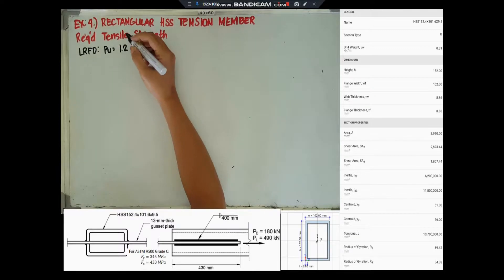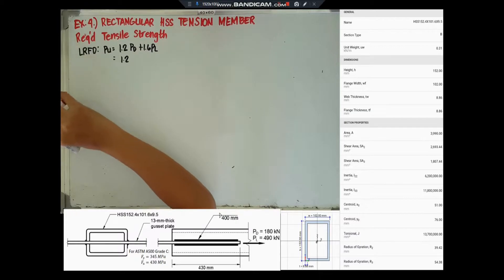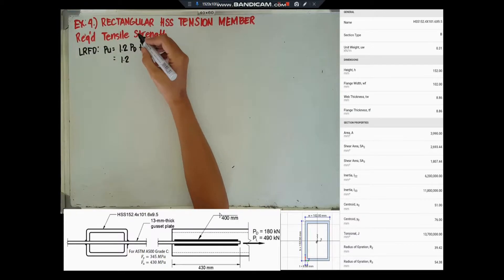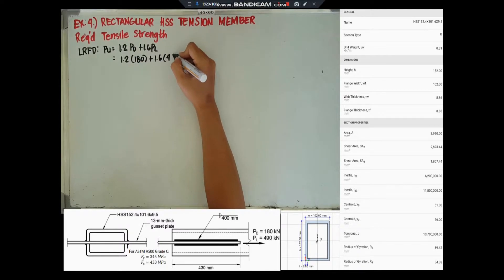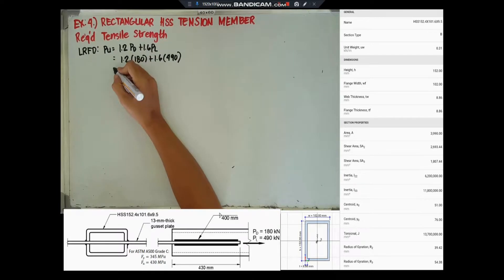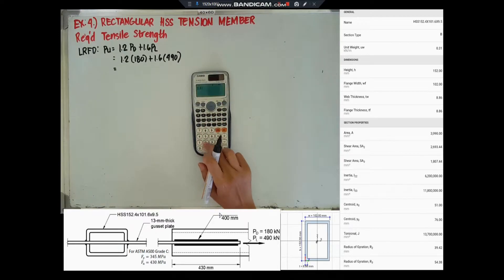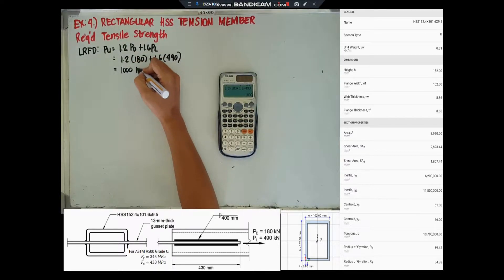For LRFD, P is equal to 1.2 dead load plus 1.6 live load. So P is equal to 1,000 kN.